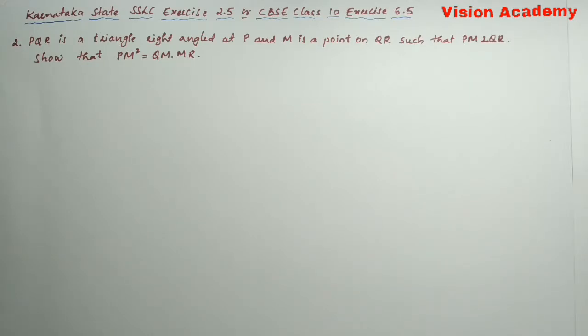Question number 2: PQR is a triangle right angled at P and M is a point on QR such that PM is perpendicular to QR. Show that PM square is equal to QM into MR.